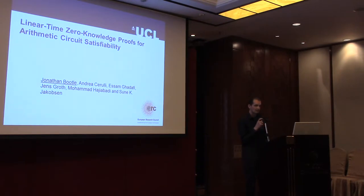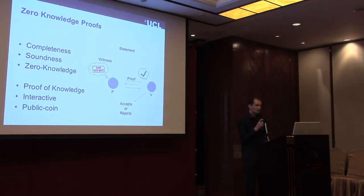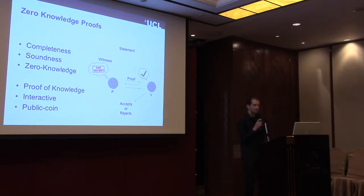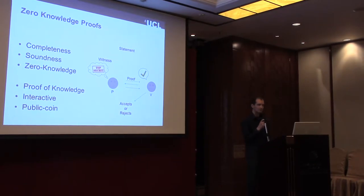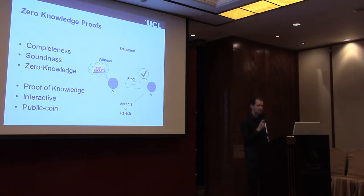Zero-knowledge proofs are two-party protocols where a prover tries to convince a verifier that some statement is true, and the verifier learns nothing at all except for the truth of the statement. Zero-knowledge protocols have three important properties: completeness, soundness, and zero-knowledge.